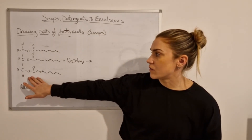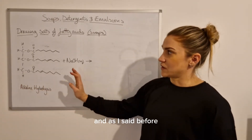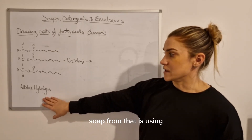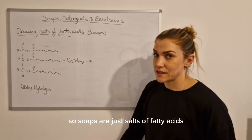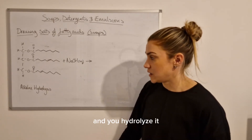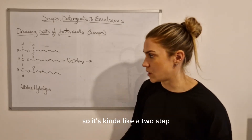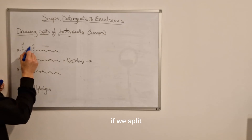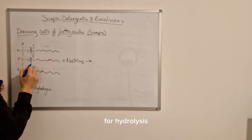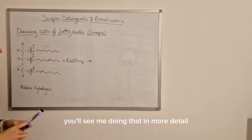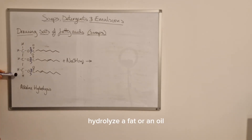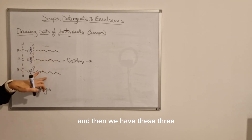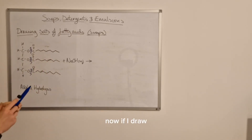We'll finish off by looking at the reaction used to make soaps and how to draw them, because people often struggle when asked to draw a salt of a fatty acid. Here we've got a fat or oil molecule - a triglyceride - and the process of making a soap is alkaline hydrolysis using sodium hydroxide solution. Soaps are just salts of fatty acids. You take the fat or oil, hydrolyze it, and then neutralize it - it's a two-step reaction. When you split the ester links you make glycerol, which is always produced when you hydrolyze a fat or oil.